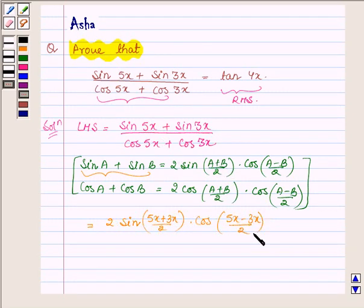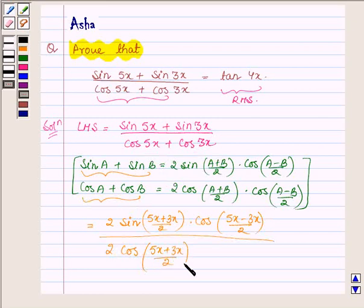And in the denominator applying the formula cos a plus cos b we have 2 cos of a plus b is 5x plus 3x upon 2 into cos of 5x minus 3x upon 2.